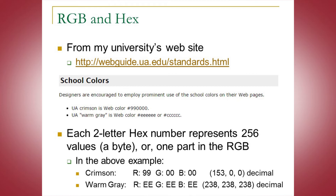Each two-letter hex represents either R, G, or B. For example, UA Crimson is the web color #990000, where the red would be 99, the green would be 00, and the blue would be 00. If I convert 99 from hexadecimal to decimal — 9 times 16 plus 9 — I get 153. For warm gray, it would be EEEEEE, all three double E's, which converts to a decimal number of 238 for all three red, green, and blue values.